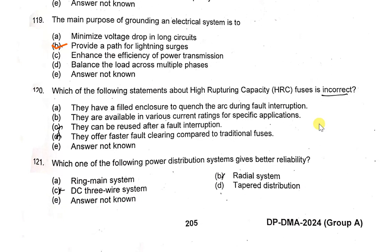Which of the following statements about high rupturing capacity (HRC) fuses is incorrect? Once an HRC fuse has operated, you must replace it — they cannot be reused after a fault interruption. That statement claiming they can be reused is incorrect.